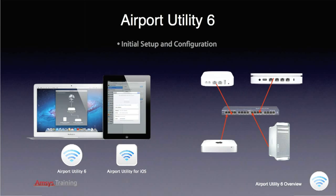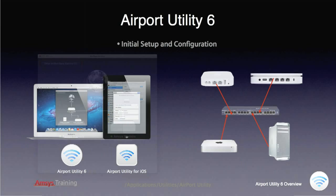Finally, make sure you have a fully working and configured wired network. You will need this to be able to attach your Airport Base Station via an Ethernet cable to your existing network, so you can access existing network services such as internet and file sharing.